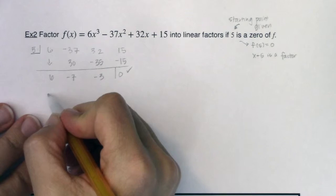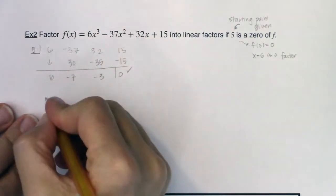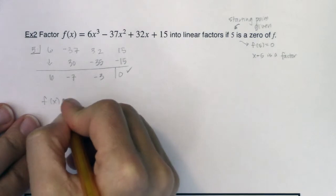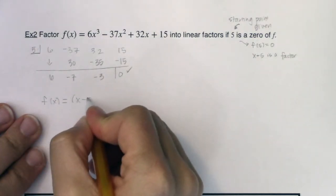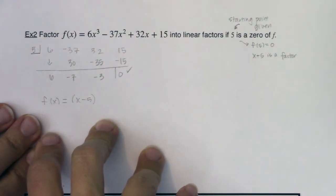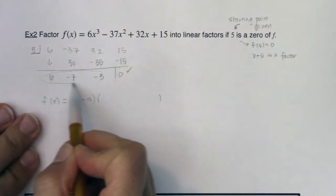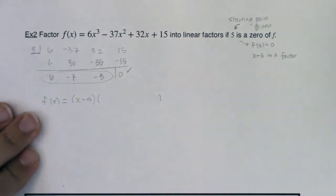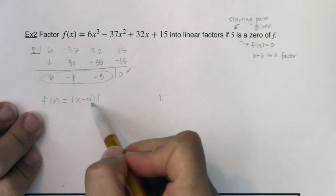So let's talk about how your synthetic division results can help you factor your polynomial. So we talked about if 5 is a zero, you know that x minus 5 is a factor. That's from the factor theorem on the previous page. Now synthetic division gives you the remaining factor.